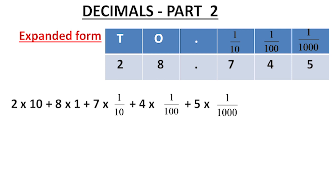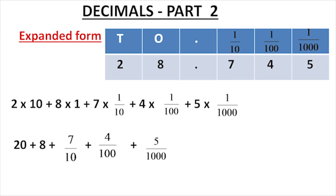Let's simplify this: 2 x 10 = 20, plus 8 x 1, plus 7 x 1/10, plus 4 x 1/100, plus 5 x 1/1000.